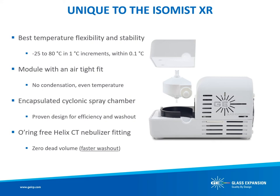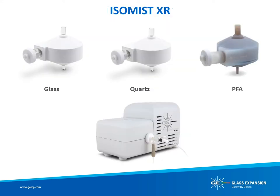The benefits of the Isomist XR include the ability to analyze volatile organics, enhance sensitivity for limited-volume samples, reduce isobaric oxide interferences, and increase the chance of passing QC checks by maintaining a constant temperature. It also provides a record of the temperature for regulatory compliance and eliminates temperature drift. Each Isomist XR is customized for the particular make and model of ICP-OES or ICP-MS instrument for which it will be used.